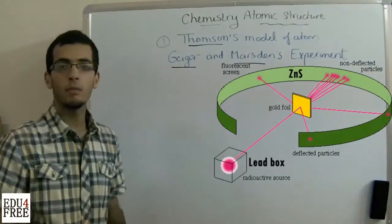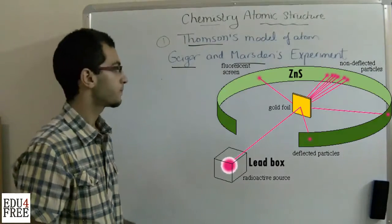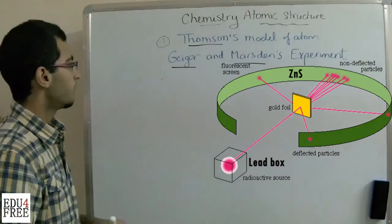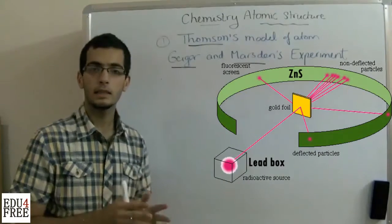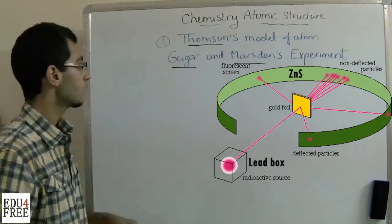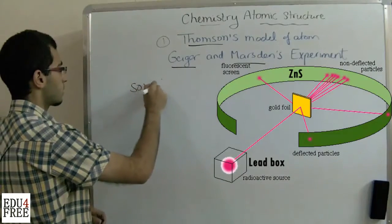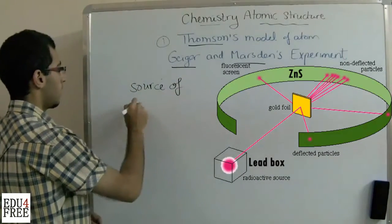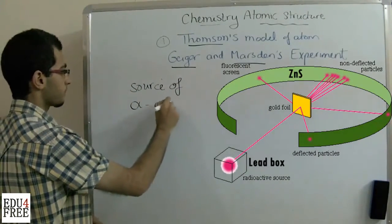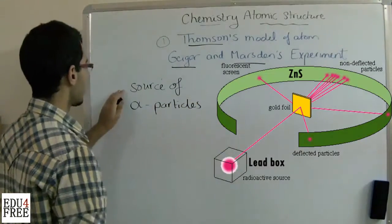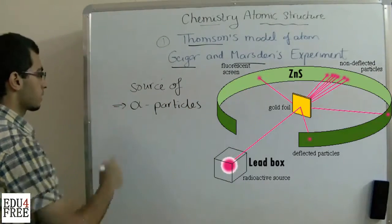They made a model as we can see here. They used a lead box. The lead box contains a source of alpha particles.